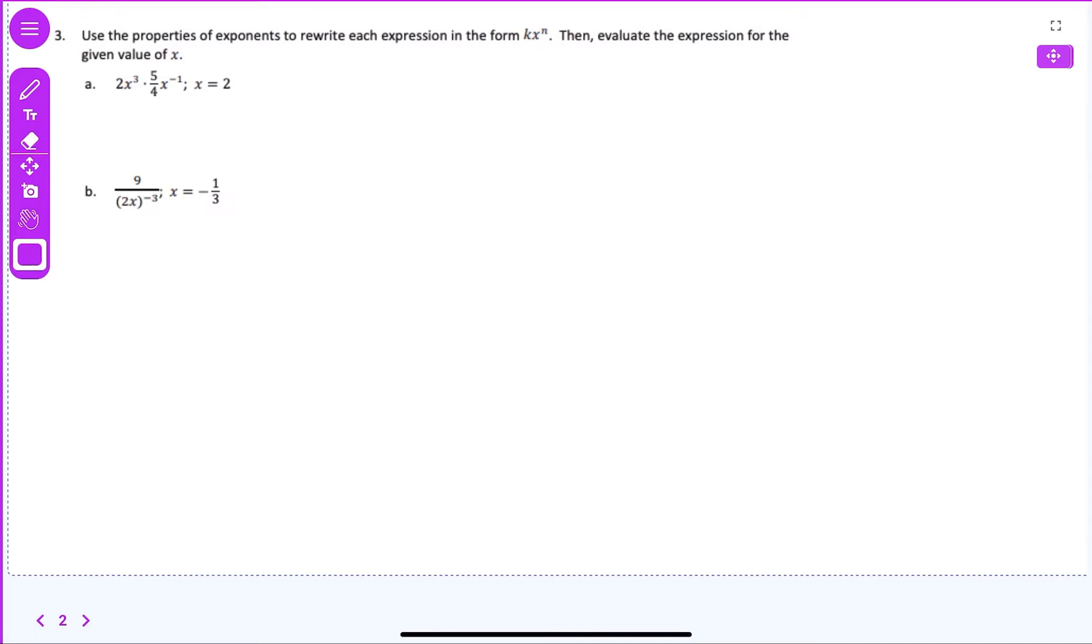It says use the properties of exponents to rewrite each expression in the form kx to the nth power. Then evaluate the expression for the given value of x. So what does that mean? All that means is we want to go ahead, since we can multiply those together, we need to get it all together in one term. We've got it multiplied by each other which means we have two terms. We want to go ahead and multiply them together, get them in one term.